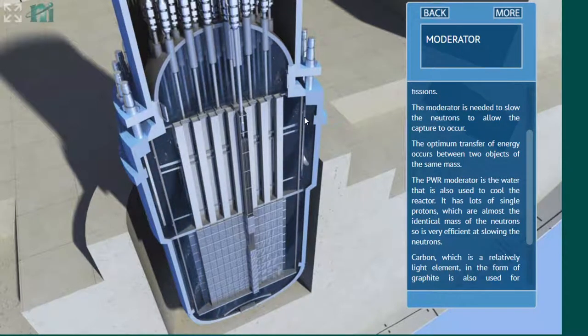For instance, RBMKs use enriched uranium or very mildly enriched uranium. They are very huge reactors, but they use a very good moderator, which is graphite.